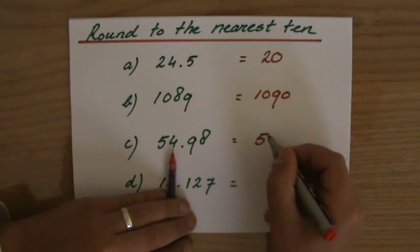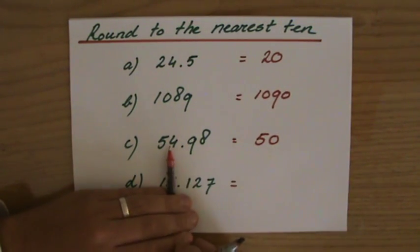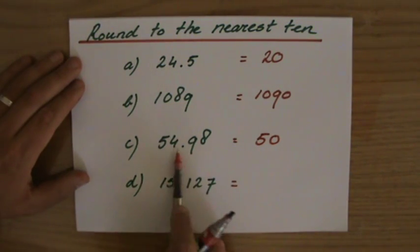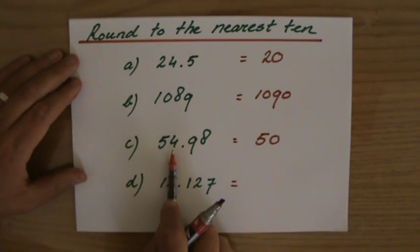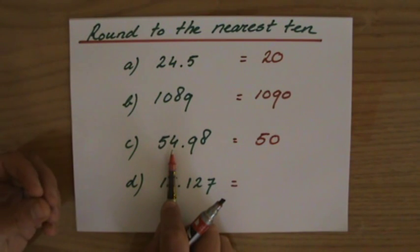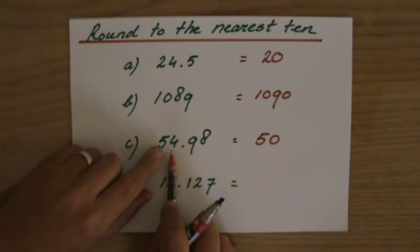So to the nearest ten, this is 50. So don't let all those big numbers there confuse you. You are only looking at the next number. It's lower than a 5 so the 5 stays a 5. This 5 stays a 5.